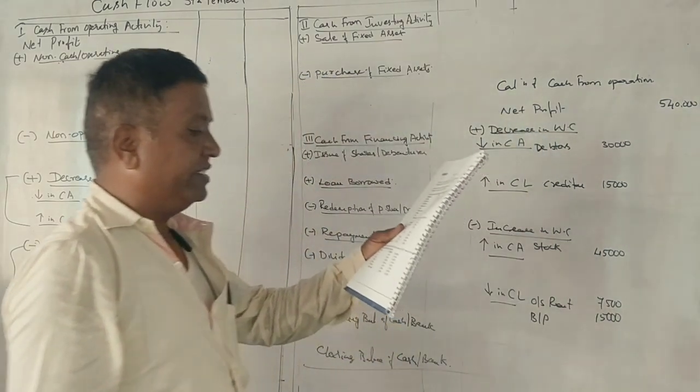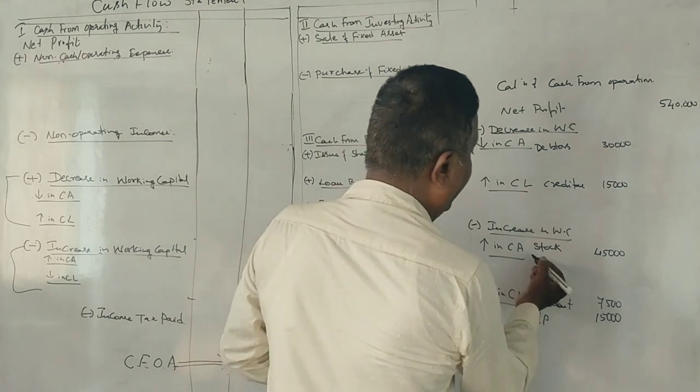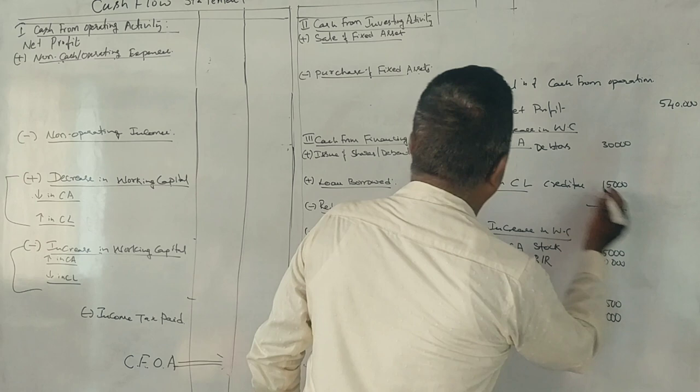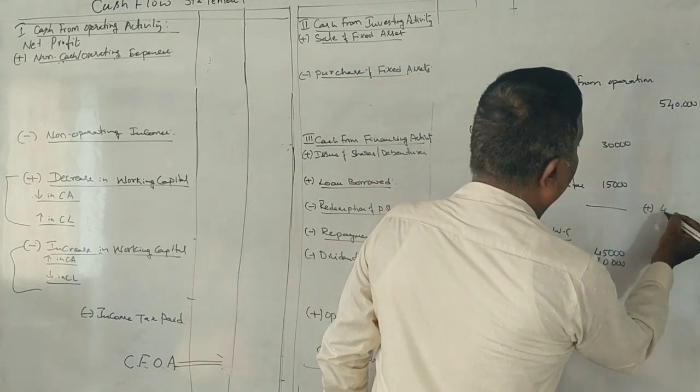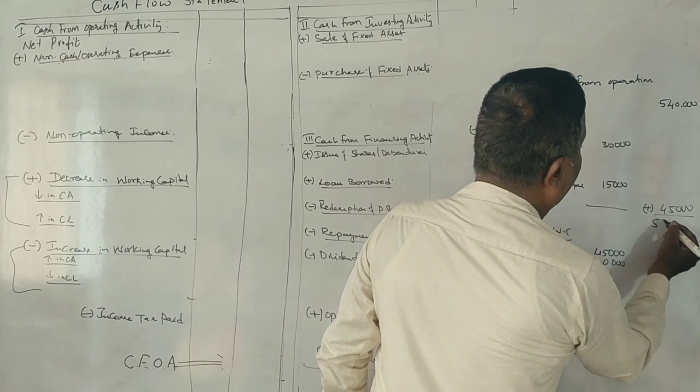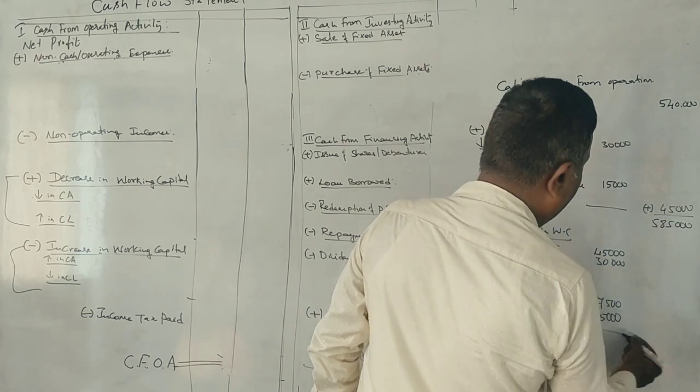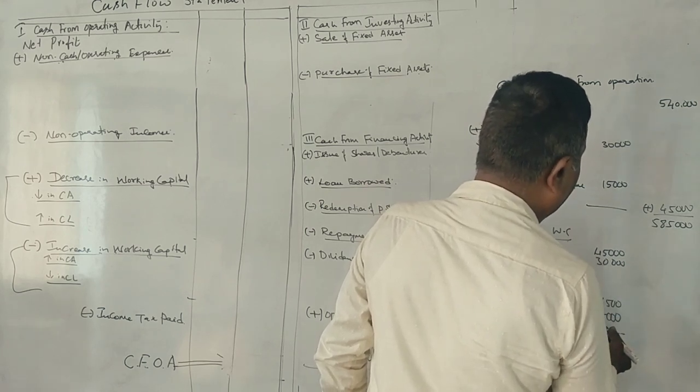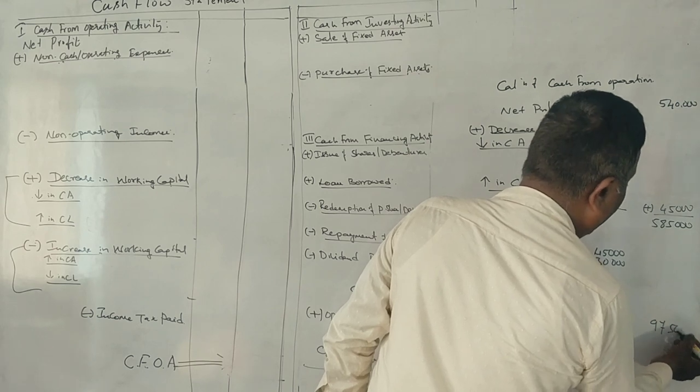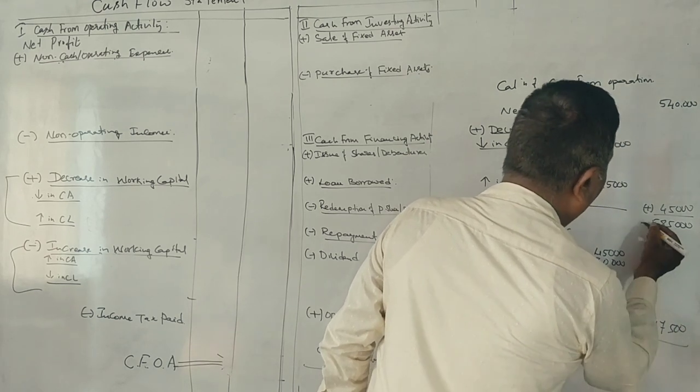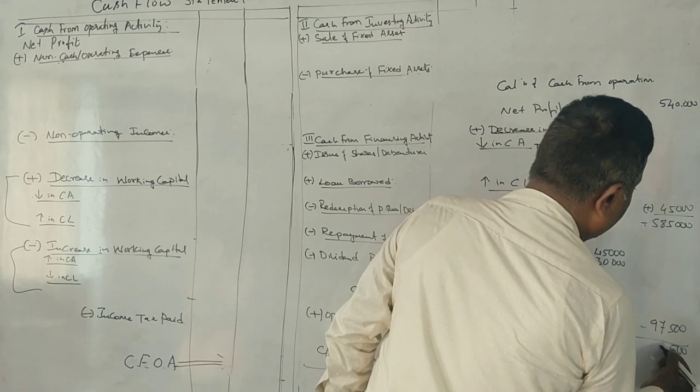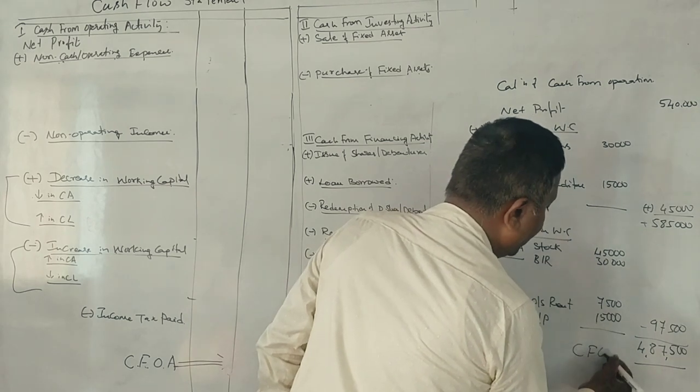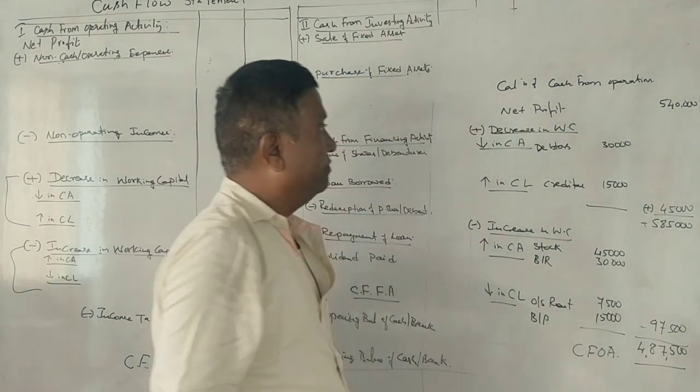Bills receivable, a current asset, increased by 30,000, so we subtract this. Adding all adjustments: 45,000 plus 30,000 gives 75,000 to subtract; 30,000 plus 15,000 gives 45,000 to add; 7,500 plus 15,000 gives 22,500 to subtract. Total adjustments are minus 52,500, giving cash from operating activity of 4,87,500.